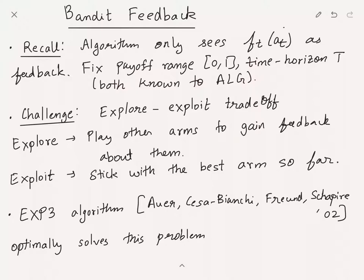As we saw, the doubling trick helps us relax the assumptions on payoff range and time horizon being unknown. Henceforth we'll fix these assumptions and focus on the setting where the algorithm knows the payoff range, which is between 0 and 1, and the time horizon T, which is known to the algorithm. The doubling trick extends to all the algorithms we've seen so far, so this is without loss of generality.